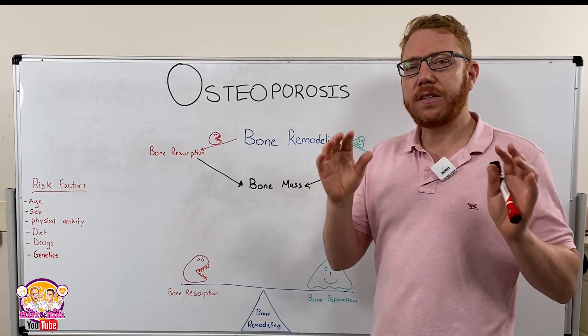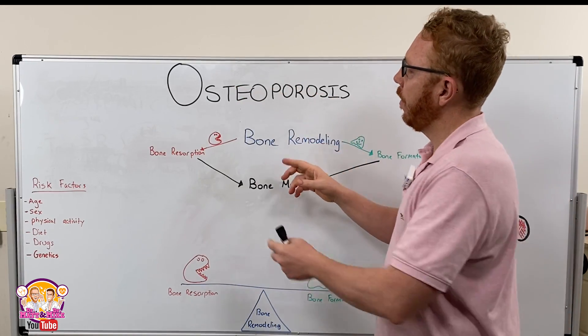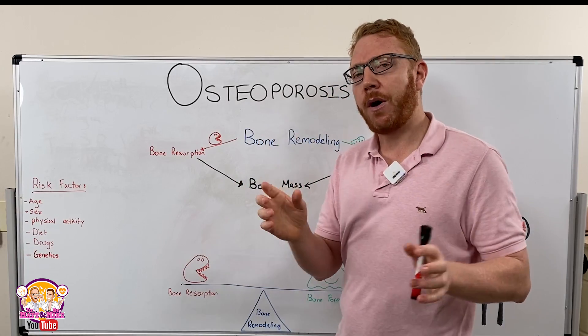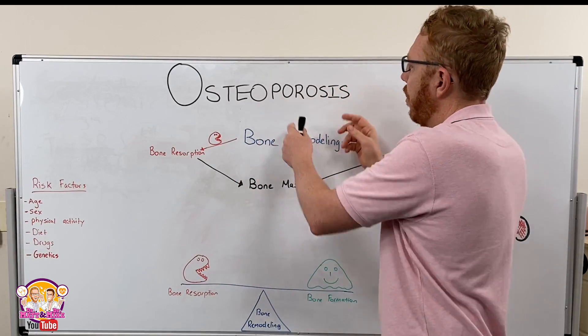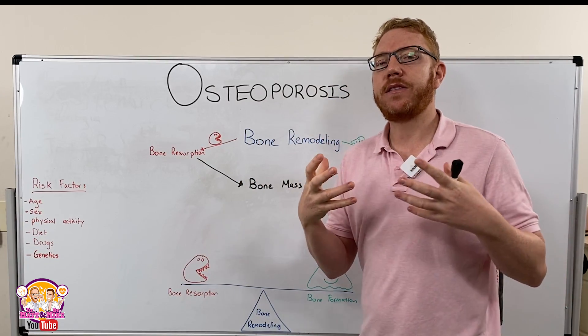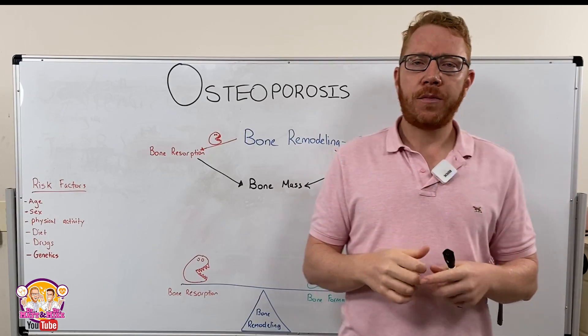Osteoporosis is a compound word where 'osteo' refers to bone and 'porosis' refers to pores. Simply, it just means our bones become weakened.